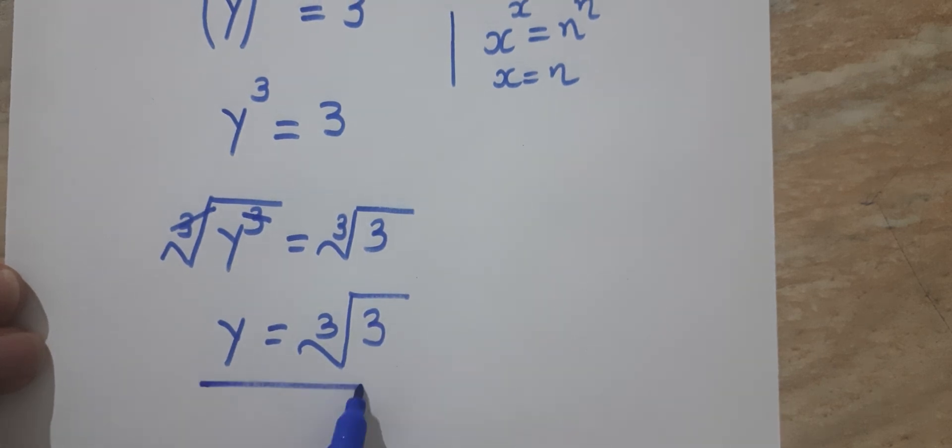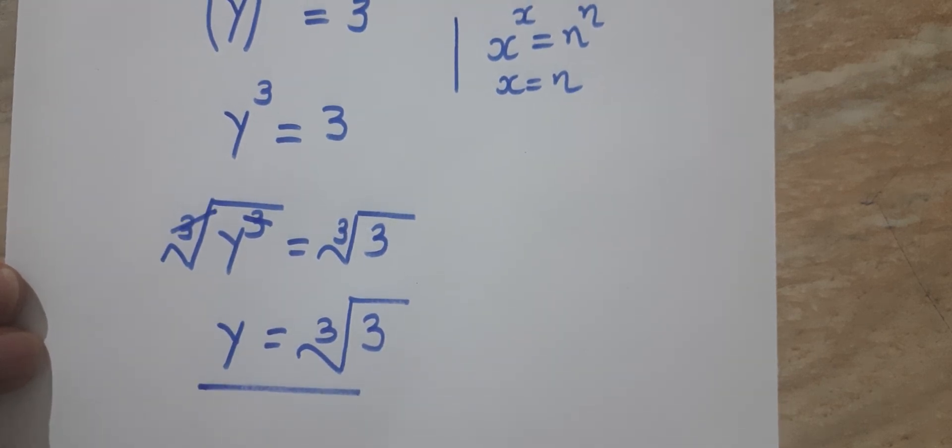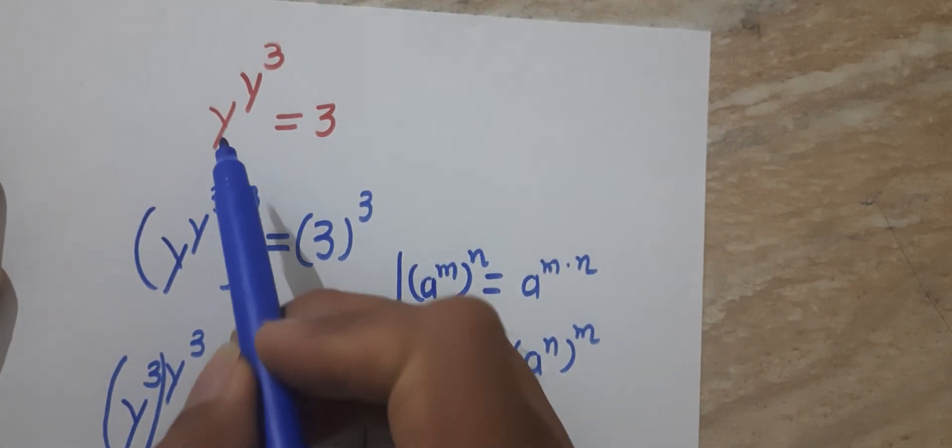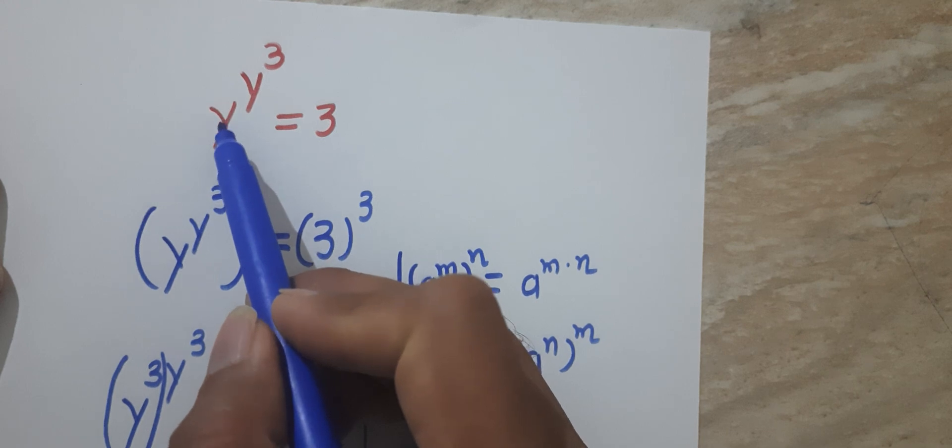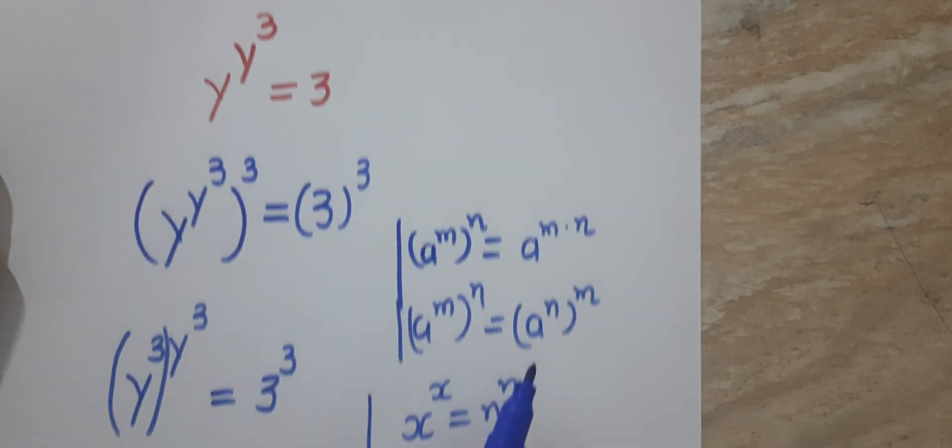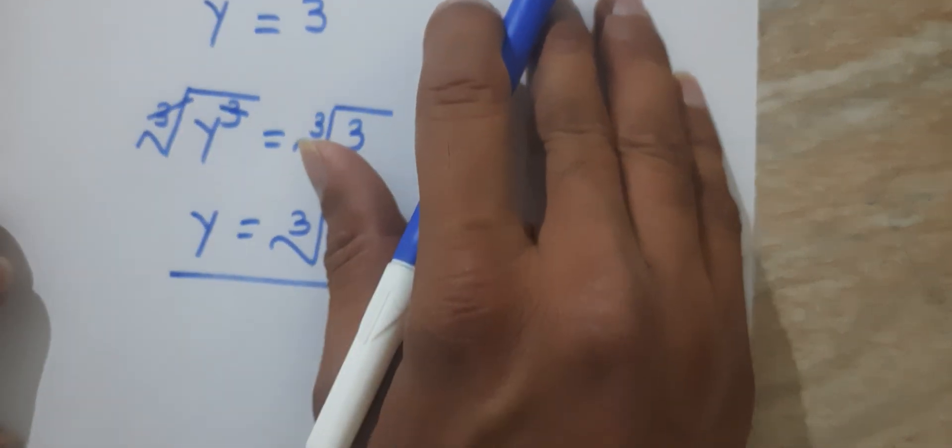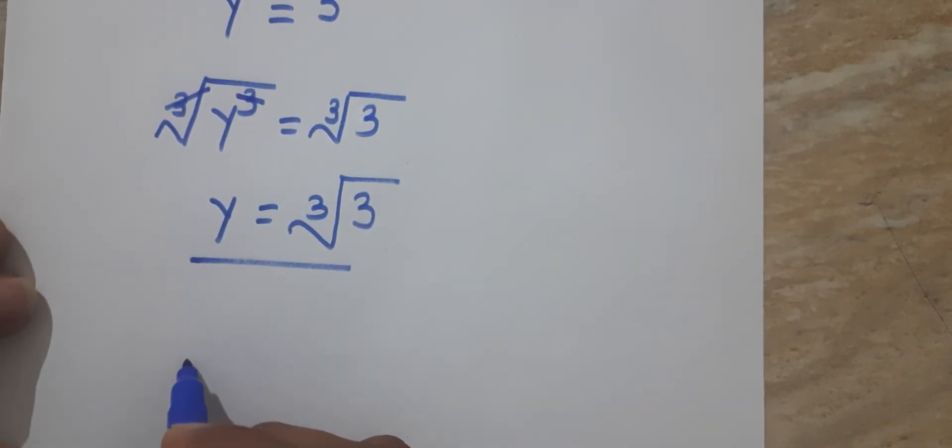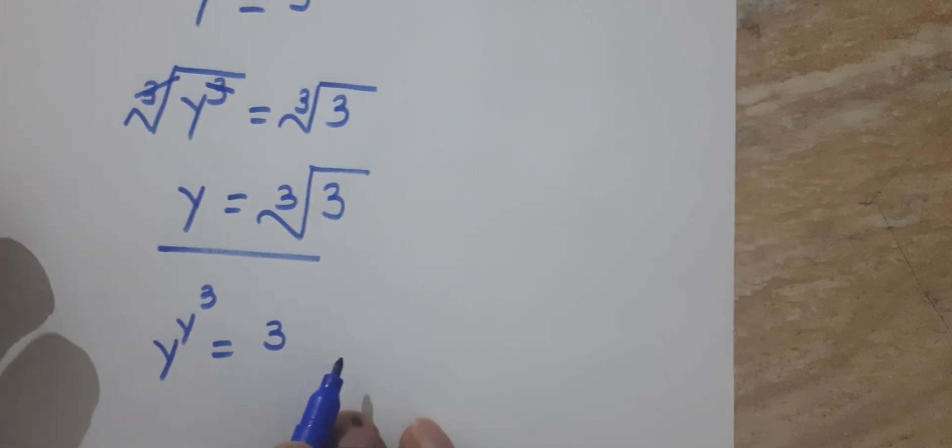Our original problem equation is y^(y³) = 3. We will put the value of y which we found into that original equation to verify. Let's substitute this inside the equation.